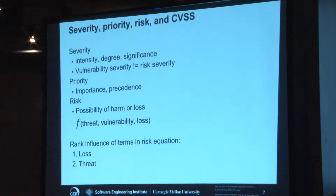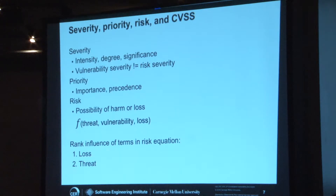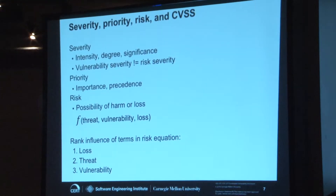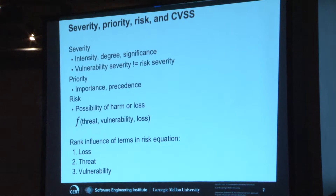If no one's attacking you, do whatever you want — you're fine. If you have nothing to lose, you've got very little risk. You might put threat first in our space. I went with loss — the idea that catastrophic loss could put you completely out of business, cost lives, cause physical damage. That's the higher factor in my mind. The least influential term in there is probably vulnerability. And yet that's what you're getting with CVSS base scores.